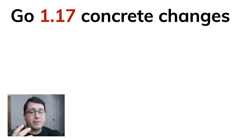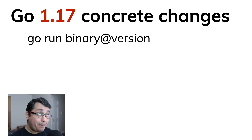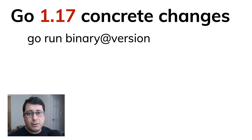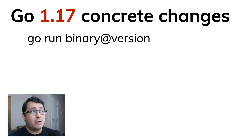Let's jump into the concrete changes and see what's new in Go 1.17. The first thing I want to highlight is running a binary using a version — similar to what happened in 1.16 when you were able to do go install and add a version without modifying your local go.mod. This changes the paradigm we were used to when defining a tools.go file that specifies all the dependencies needed for a project. I'll show you an example of how this works.